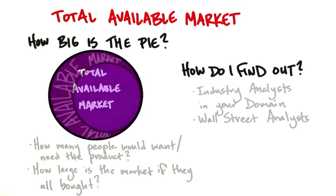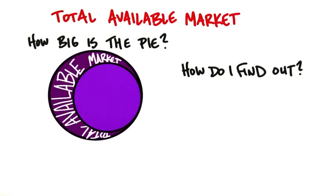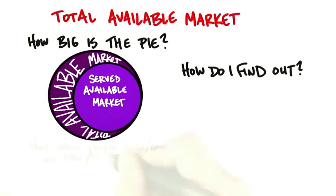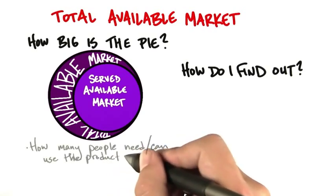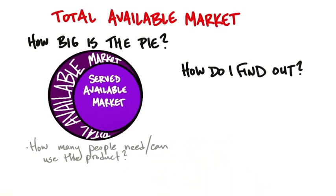The next step is: how big is my slice? We use the term 'served available market' for that. The served available market means, instead of the theory that there are 7 billion people in the world, how many people can really use, say, a mobile app? A mobile app is dependent on how many people have mobile smartphones.